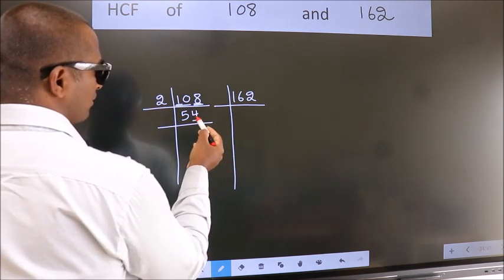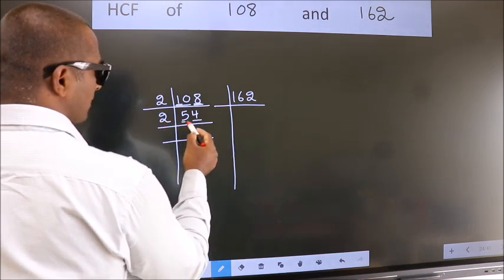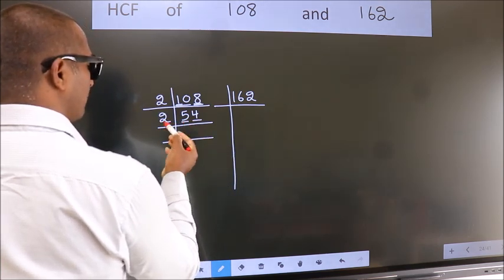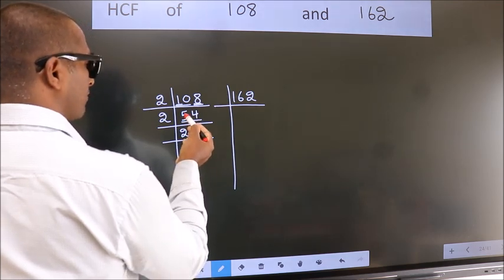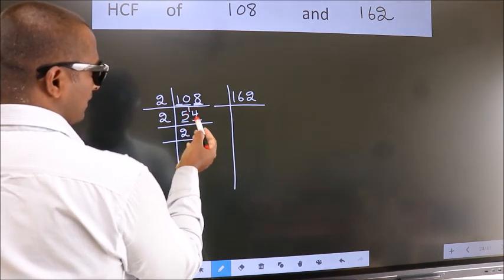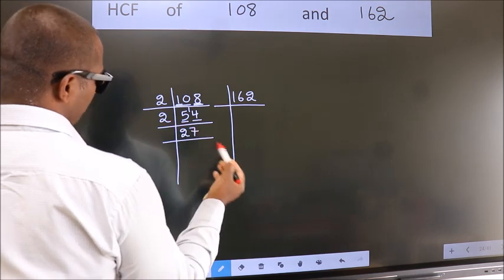Now, last digit 4, even number, so take 2. First number 5, a number close to 5 in 2 table is 2 fours 4. 5 minus 4, 1, 1 carried forward 14. When do we get 14 in 2 table? 2 sevens 14. Now,